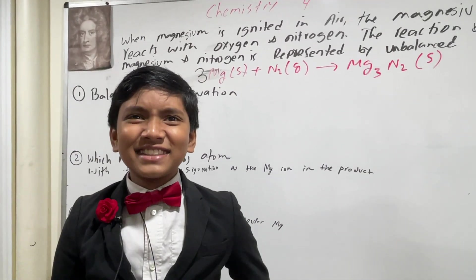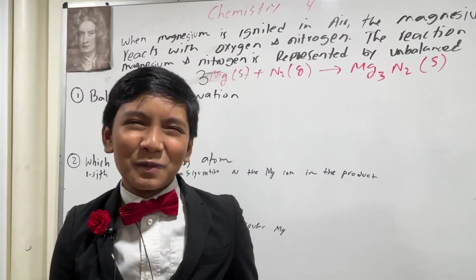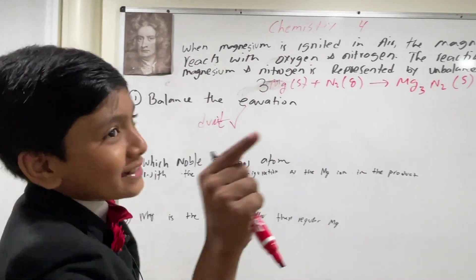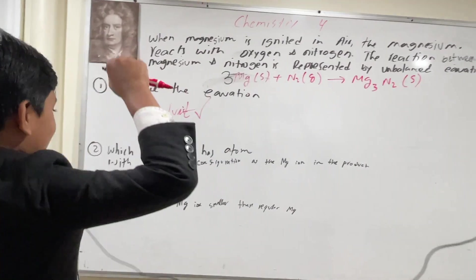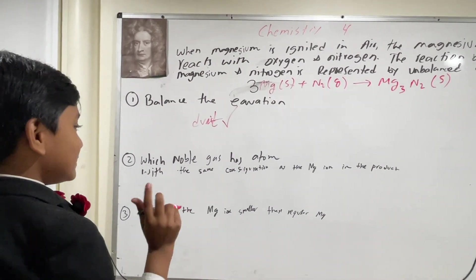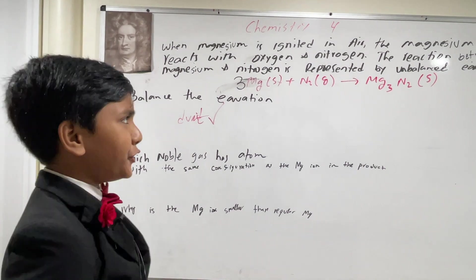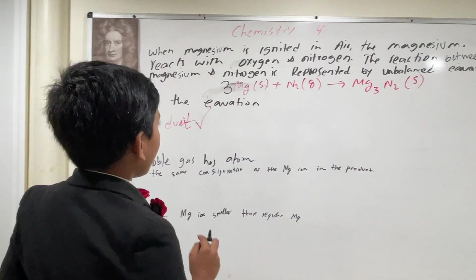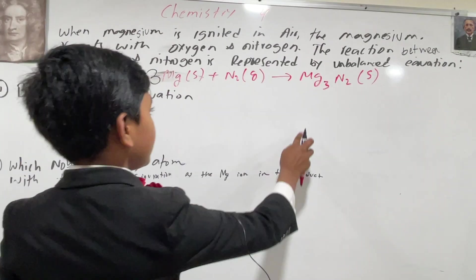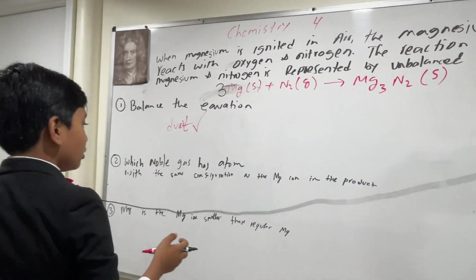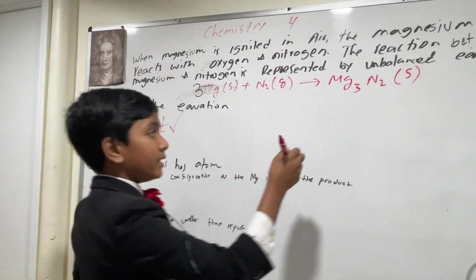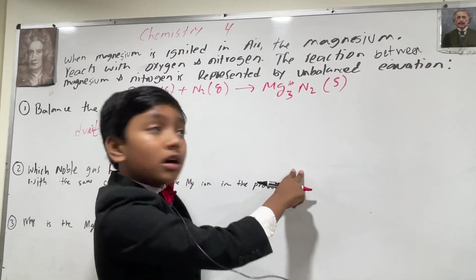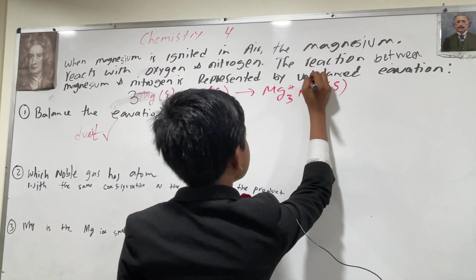So wait — something's telling me you were the one who wrote the problem, cameraman. What Noble Gas has an atom with the same configuration as the Mg ion in the product? This guy is definitely not a native English speaker. Well, good thing we know that here we have Mg3N2, and the Mg3 here is actually Mg3 2+. That's why this thing is 3 minus.